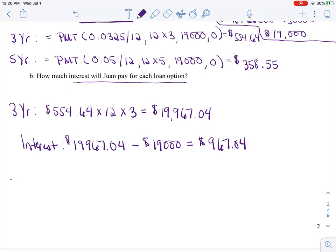Now with the five year plan, my monthly, or Juan's - I always want to take ownership of this car I guess - is $358.55. We did it for every month and we did it for five years, and that total comes to $21,513.